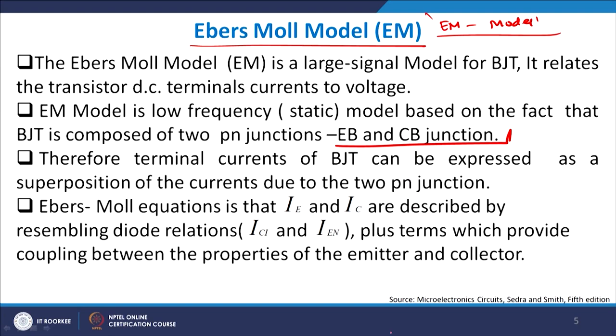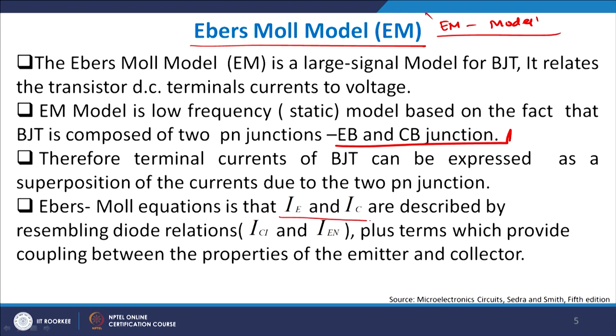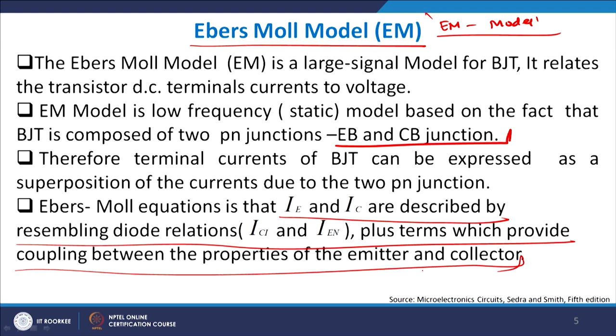The idea of the Ebers-Moll model is that everything can be broken down into two sets of currents: one current flowing through the emitter-base junction and another through the collector-base junction. The total terminal currents IC, IB, and IE are a weighted superposition of these two junction currents. The Ebers-Moll equations describe IE and IC using diode relationships plus the coupling between emitter and collector properties.